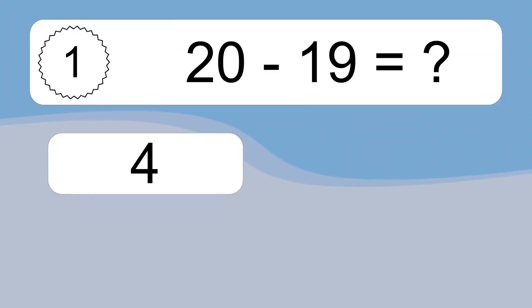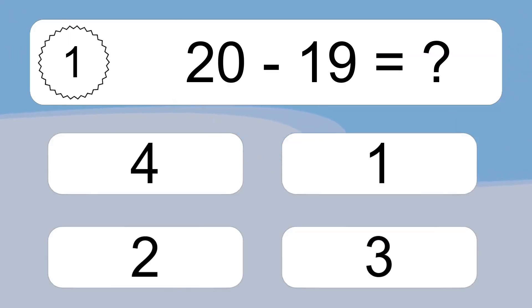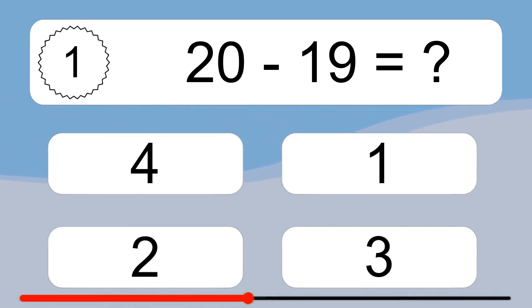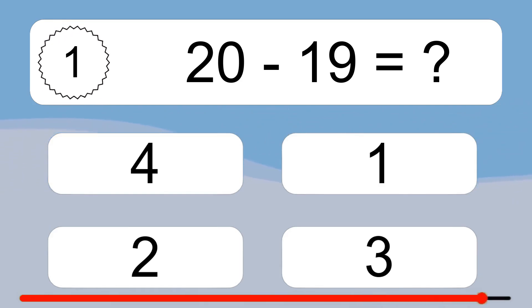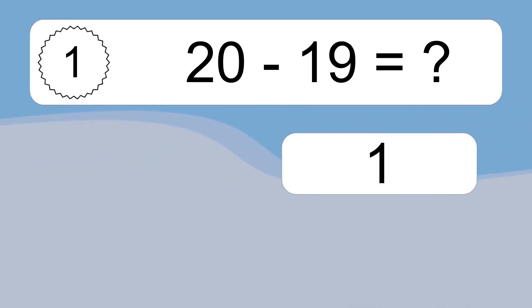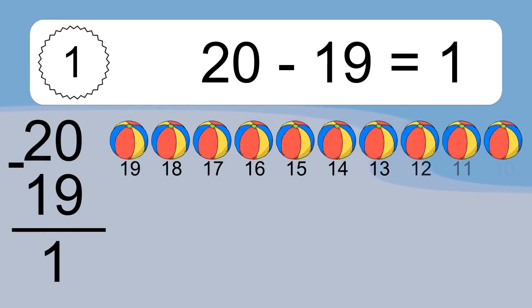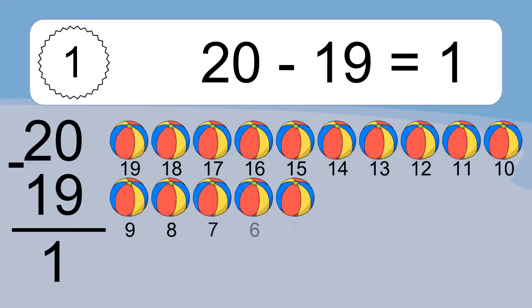20 minus 19 equals what? 20 minus 19 equals 1.